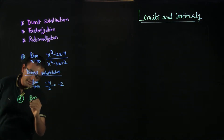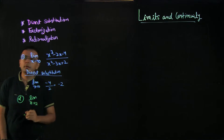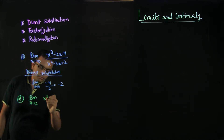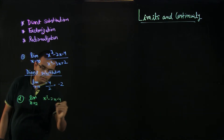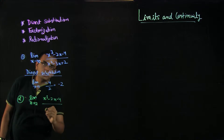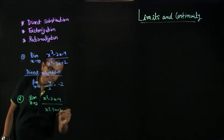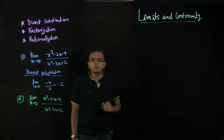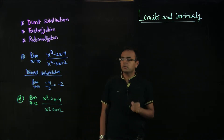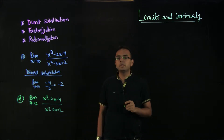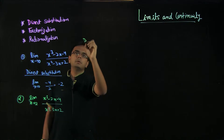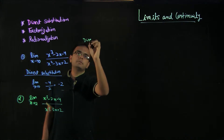Now let us see another problem. This time we have limit x tends to 2 of x³ minus 2x minus 4 divided by x² minus 3x plus 2. What is the first thing we should always do? The first thing is direct substitution.